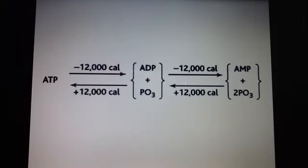We should recognize that 12,000 calories are released when it is changed from ATP to ADP and ADP to AMP, so when the phosphate is taken away.